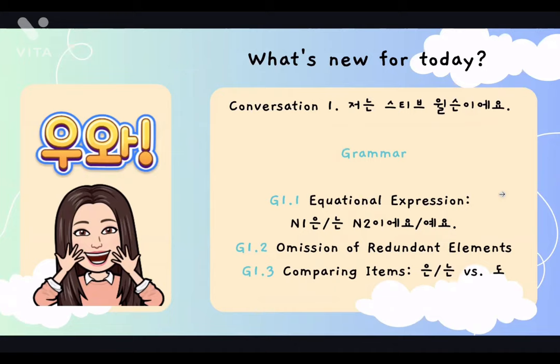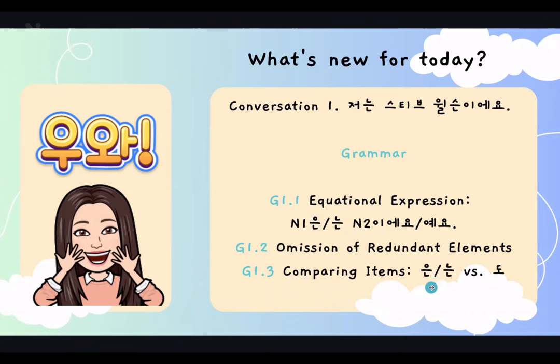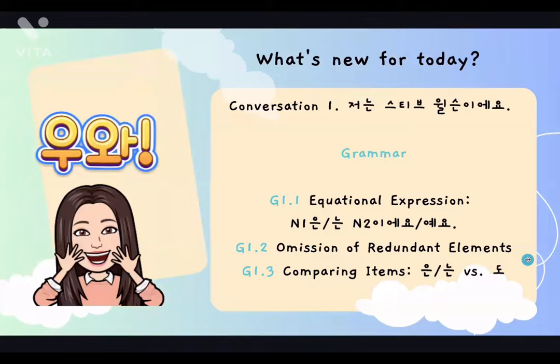Alright, so what is new for today? For today, conversation one: 저는 스티브 Wilson이에요. We're going to learn today three grammar points. First one: equational expression — 은, 는, 이에요 or 예요. Second one: omission of redundant element. Third one: comparing items — 은 or 는 versus 도. Through conversation one, you're going to learn how to introduce yourself in Korean. Let's go!